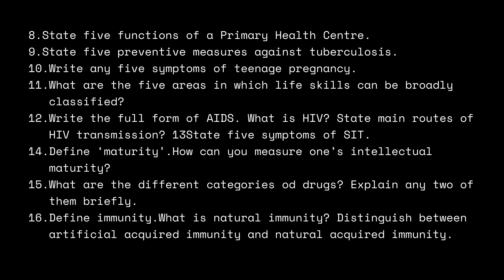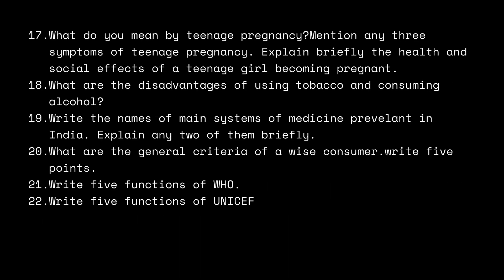Here are the ten-mark questions. Write the full form of AIDS, what is HIV, state the various routes of HIV transmission, state five symptoms of STI. Define maturity and how can you measure one's intellectual maturity. What are the different categories of drugs — explain any two briefly. Define immunity, what is natural immunity, distinguish between artificially acquired immunity and naturally acquired immunity. What do you mean by teenage pregnancy, mention any three symptoms, and explain briefly the health and social effects of a teenage girl becoming pregnant — ten marks. What are the disadvantages of using tobacco and consuming alcohol — ten marks. Write the names of the main systems of medicine prevalent in India and explain any two — ten marks. What are the general criteria of a wise consumer, write five points — five marks. Write five functions of WHO — five marks. Write five functions of UNICEF — five marks.